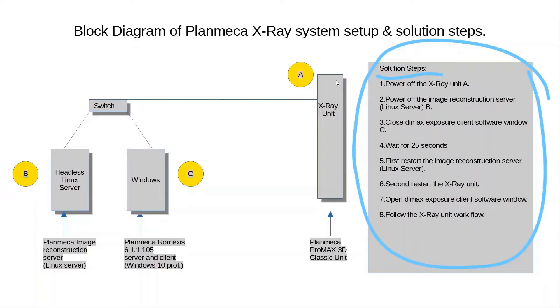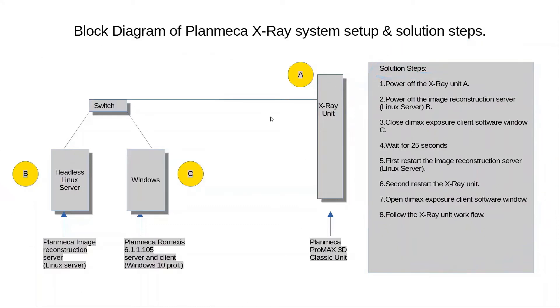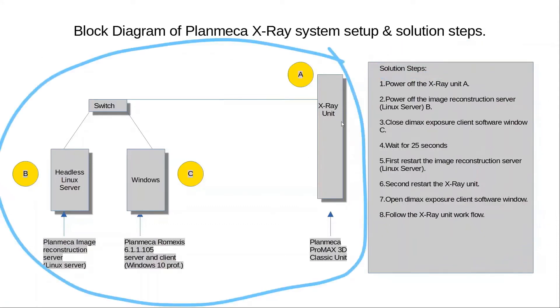The system setup block diagram has four main components: the X-ray unit, a switch, a Linux server, and a Windows machine.